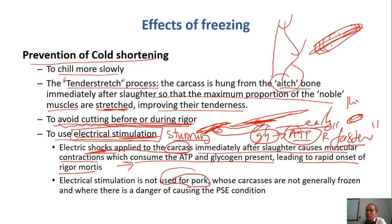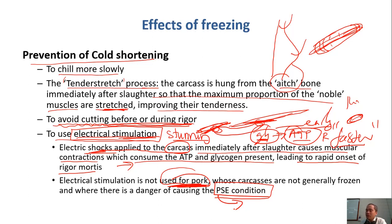However, electrical stimulation is normally not applied for pork — it can be applied for beef but not for pork. In pork, if the metabolism of glycogen is very fast while the temperature is still warm, there is a lot of accumulation of lactic acid and the pH drops too much. This results in PSE meat — pale, soft, exudative — which we do not want.